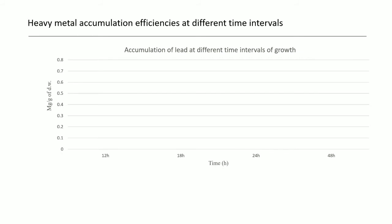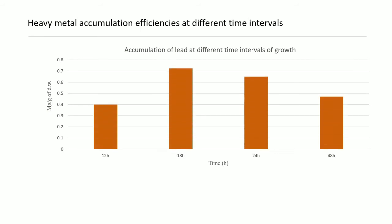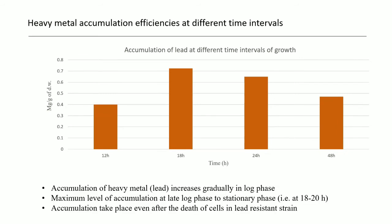The concentration of heavy metals was determined using atomic absorption spectroscopy as described in the materials and methods. In this graph, the accumulation of lead was studied at different time intervals of growth, and the concentration was determined at 12 hours, 18 hours, 22 hours, and 48 hours. The accumulation of heavy metals increased steadily in log phase and showed a maximum level of accumulation at late log phase to stationary phase, which is at 18 to 20 hours. The maximum accumulation efficiency of the resistant strain was at 18 hours with 0.7 to 3 mg per gram.